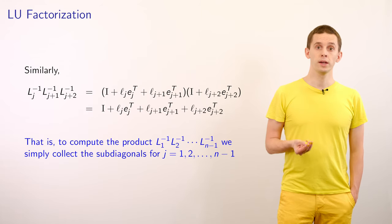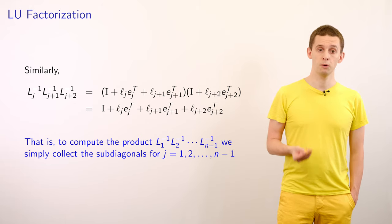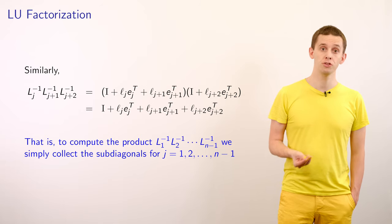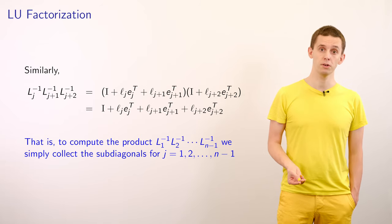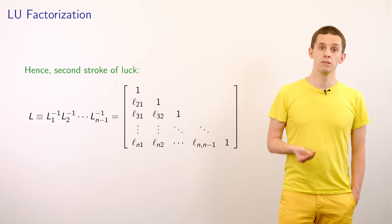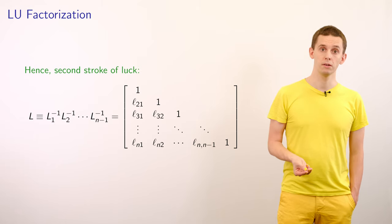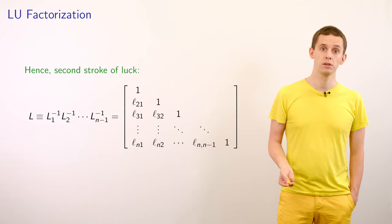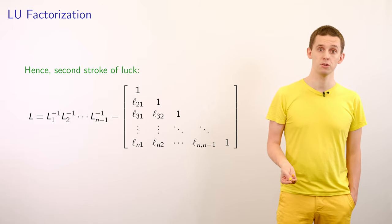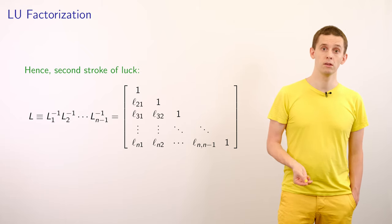Extending to additional factors, the product L_j^{-1} * L_{j+1}^{-1} * L_{j+2}^{-1} shows that the sub-diagonal terms simply collect additively. This is the second stroke of luck: our matrix L simply collects all the sub-diagonals of the elementary elimination matrices. We end up with a very simple form — ones on the diagonal and all the small ℓ_{ij} multipliers in the columns below the diagonal.